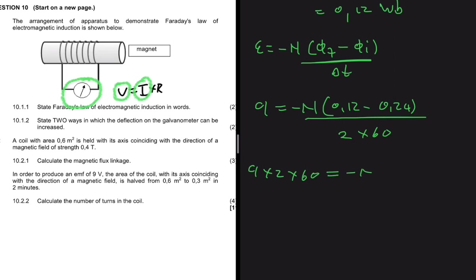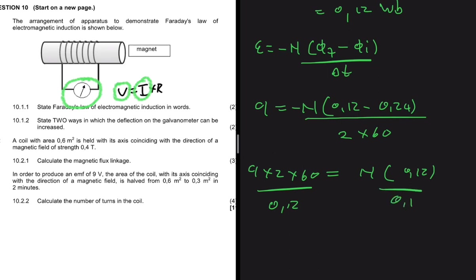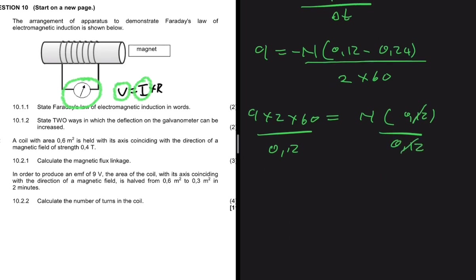We have 0.12 − 0.24 = −0.12. Multiplying −N by −0.12 gives +0.12N, so we can drop the minus sign. Dividing both sides by 0.12, we get N = (9 × 2 × 60) / 0.12, which equals 9000 turns.